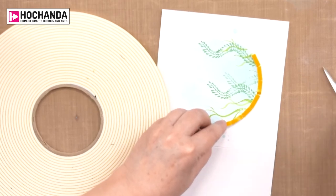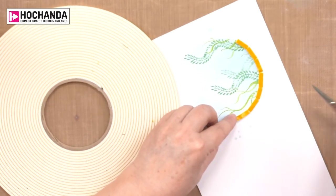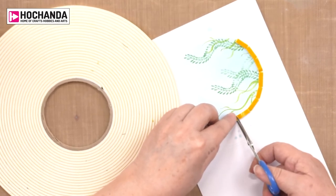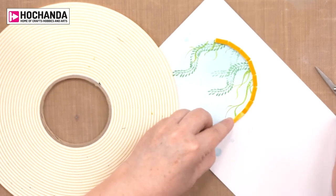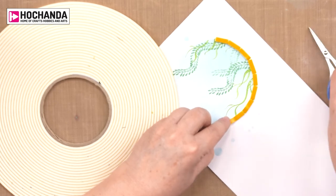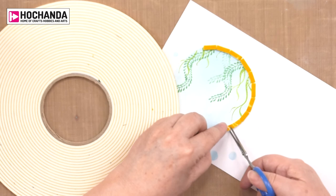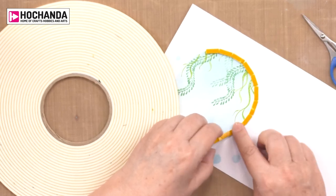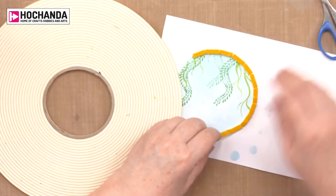We're going to work our way around. This is probably the fiddliest bit. I think this is three millimeter tape, three millimeter thick. Two millimeter would probably be better but that depends on your shrink plastic.